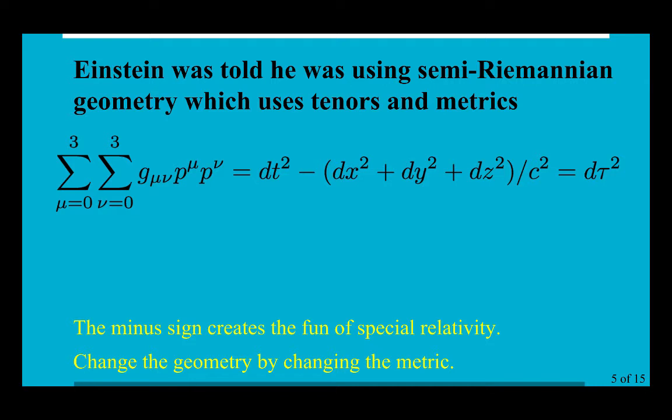Einstein was told that he was using semi-Riemannian geometry, which uses tensors and metrics. The metric is this g_mu_nu thing, and I've written the events as p_mu and p_nu, and we do this contraction and there we've got it: the invariant interval of special relativity. It's that minus sign that makes the logic of special relativity so fun.